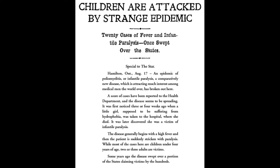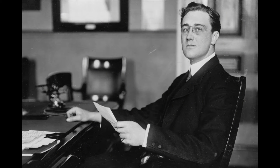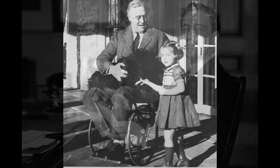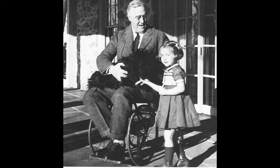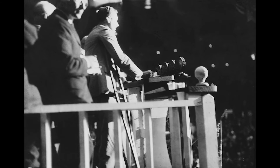By 1910, epidemics became a regular occurrence worldwide, primarily in cities during summer. There was a large outbreak of polio during 1916 in the United States, and although the total number of cases was unknown, there were over 9,000 cases reported in New York alone. Five years later, in 1921, future U.S. president Franklin D. Roosevelt contracted polio and was left with severe paralysis, but this would not stop his campaign.